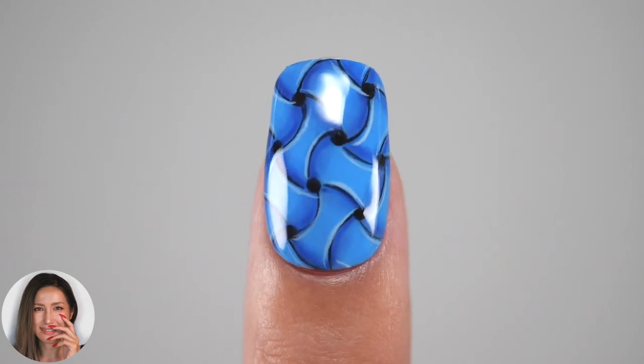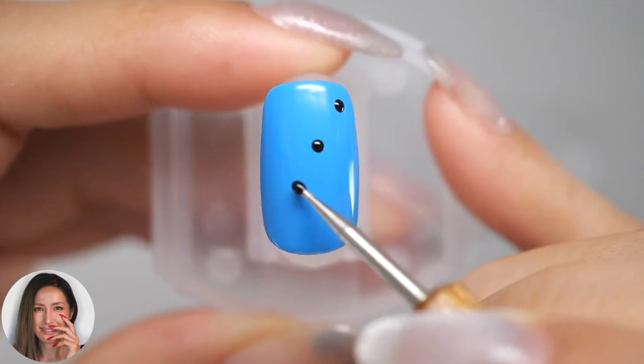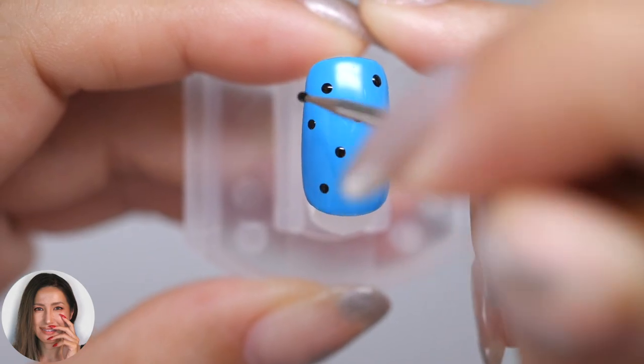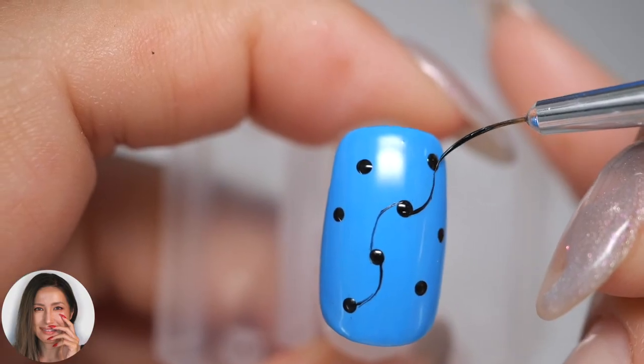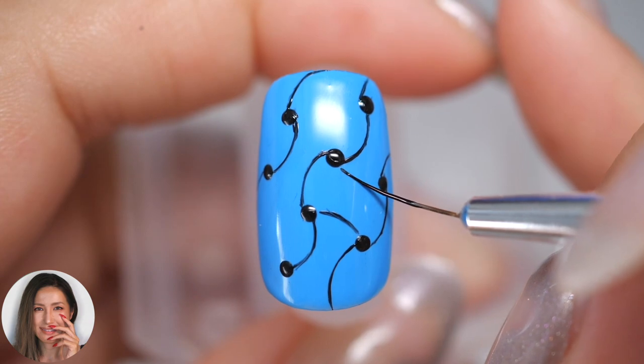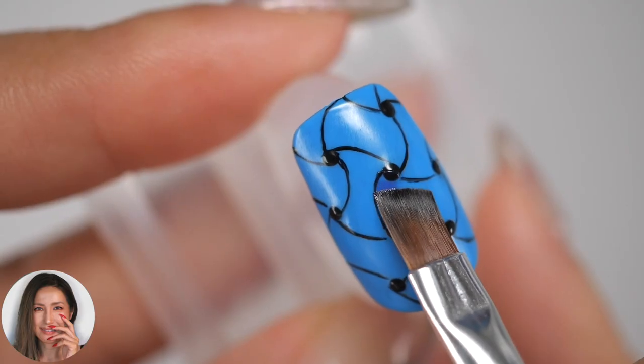Hi everyone, it's Asuka here. In this video, I will show you how to make very difficult trick art nails. This design, which looks like a three-dimensional braided pattern, is actually drawn using only gel.